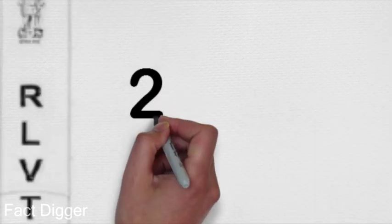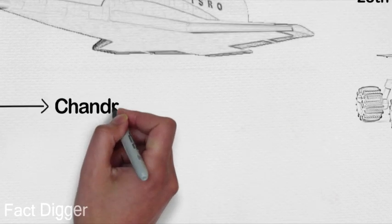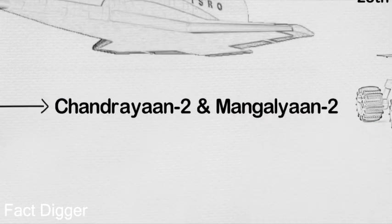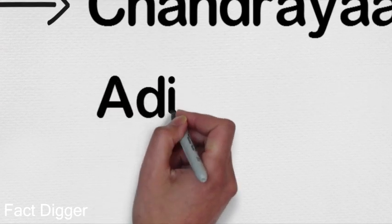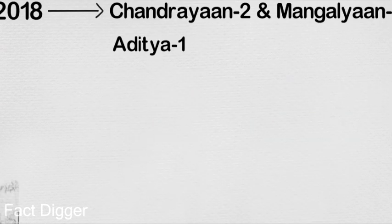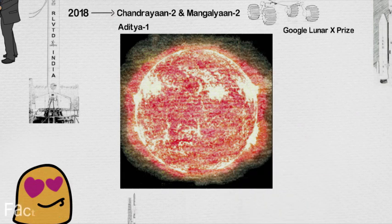Moreover, ISRO has already announced that 2018 is the expected year to launch Chandrayaan-2 and Mangalyaan-2 for future explorations. Also, they are working on a new project called Aditya-1 to carry out a mission to the Sun by the year 2020.